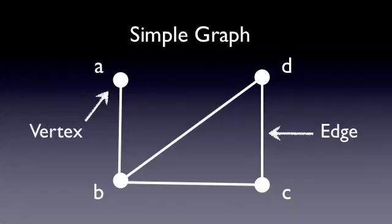Notice that in a simple graph, the only attributes are vertices and edges. You don't have anything fancy like loops or parallel edges. We'll get to those later.